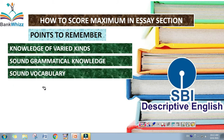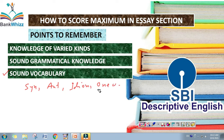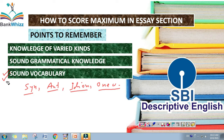The third important point is to have a sound vocabulary. You must have a very good stock of synonyms, antonyms, idioms and phrases, and one-word substitutions. These chapters are to be covered properly. The more vocabulary you have, the more flexibility there will be in your writing skill. The bigger your stock of vocabulary, the easier it will be to express your knowledge in different ways.